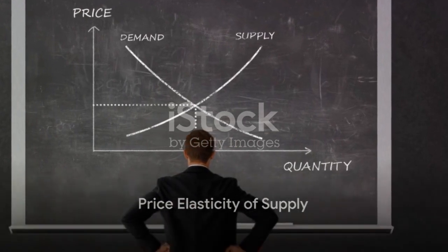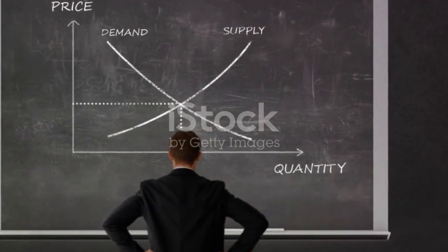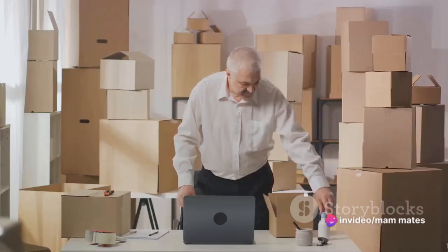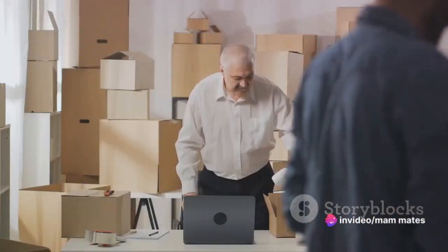The second component, price elasticity of supply, works in a similar way but from the perspective of the supplier. It measures how much the quantity supplied of a good or service changes in response to a change in its price.